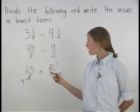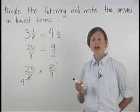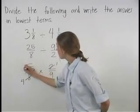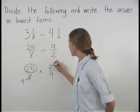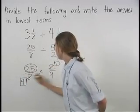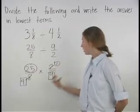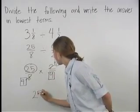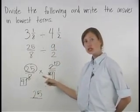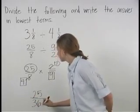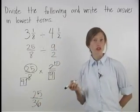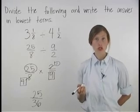However, we can't cross-cancel 9 and 25. So we simply multiply across the numerators and then across the denominators. So we have 25 times 1, which is 25, and 4 times 9, which is 36. So we have 25 over 36, which is in lowest terms.